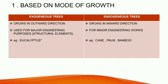Next is endogenous trees. These are the type of trees which grow in bulk in the inward direction. Timber obtained from these trees is used in minor engineering works, such as for shuttering purposes. Major engineering works — such as columns and beams — use exogenous trees, while endogenous trees are used in minor engineering works. Examples of endogenous trees are cane, palm, bamboo, etc.